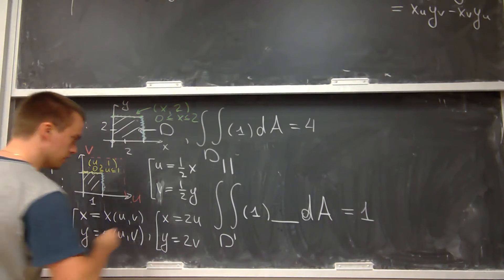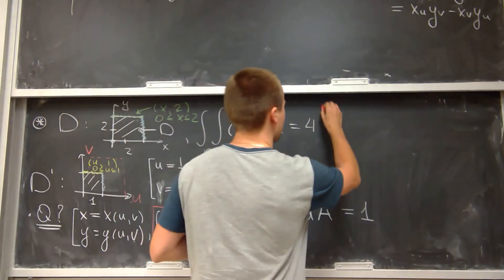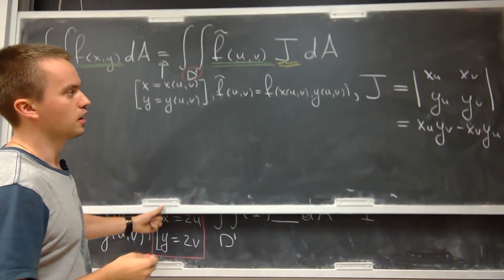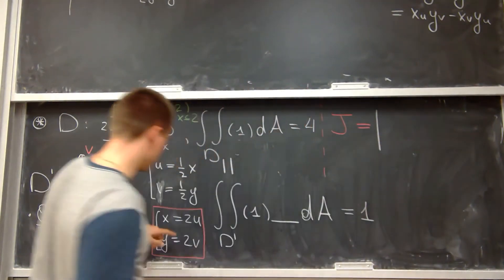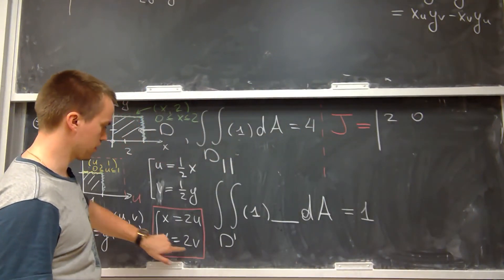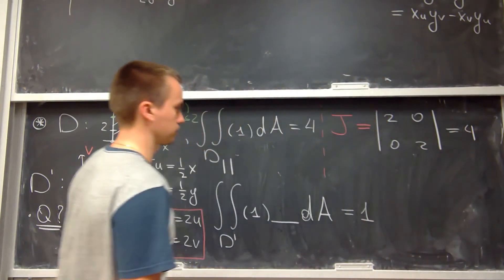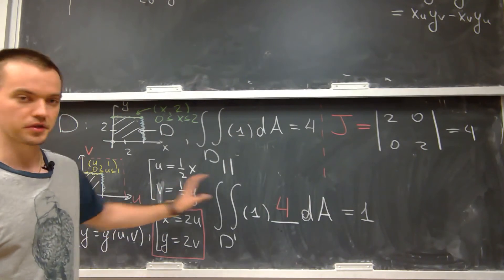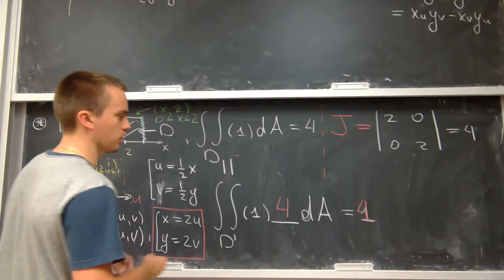Since we have our change of variables formulas, let's find the value of the Jacobian. The Jacobian is the determinant of the partial derivatives. x partial u = 2, x partial v = 0, y partial u = 0, y partial v = 2. So my Jacobian is equal to 4. Since the Jacobian equals 4, putting this factor into the double integral over D-prime, we can see that the answers for both integrals are the same.